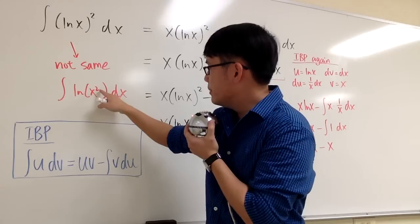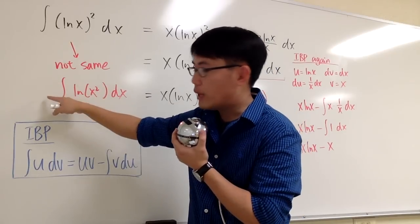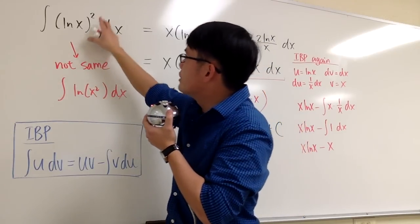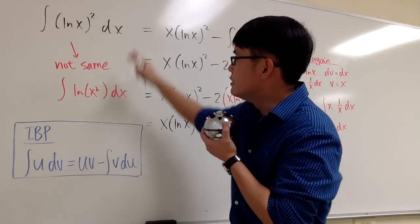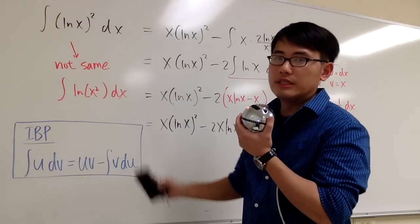This is actually easier because you can take this 2 to the outside. But in this situation, this right here, we cannot do anything with the 2. It has to stay like that. There is no log property that we can use in this situation.